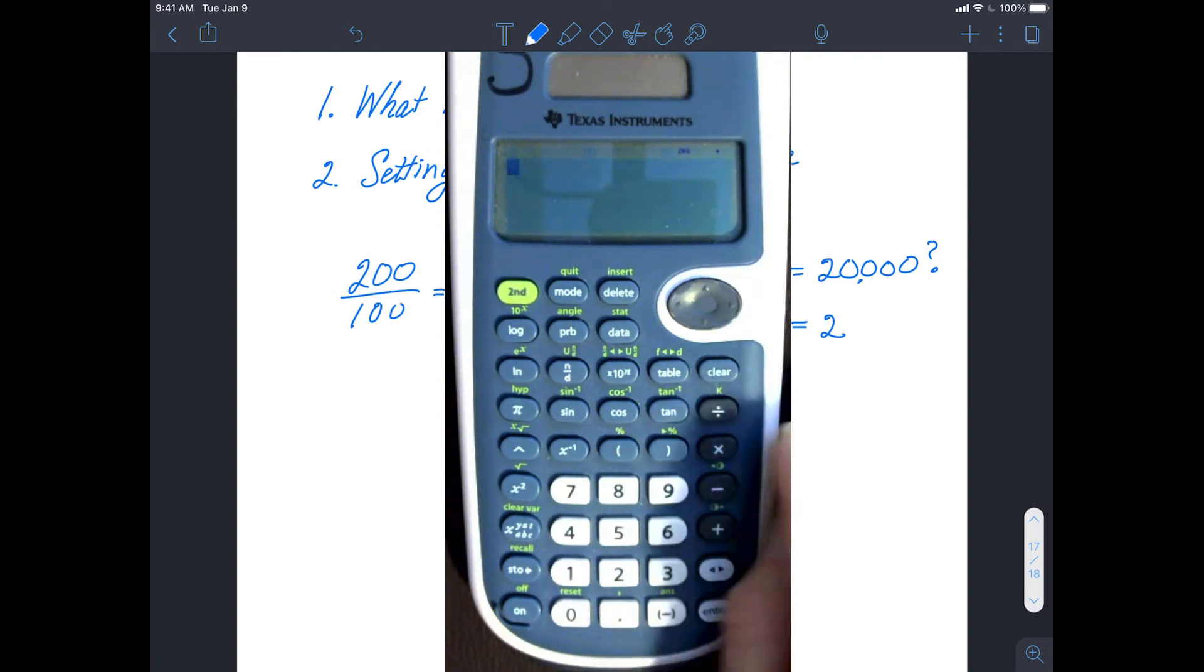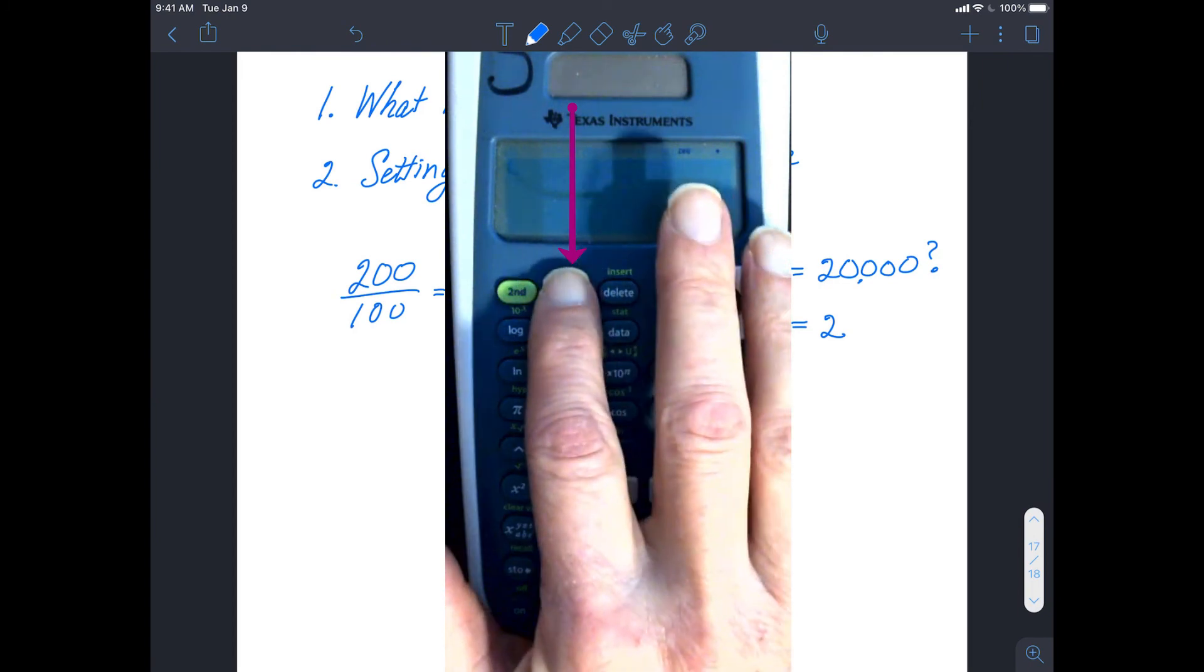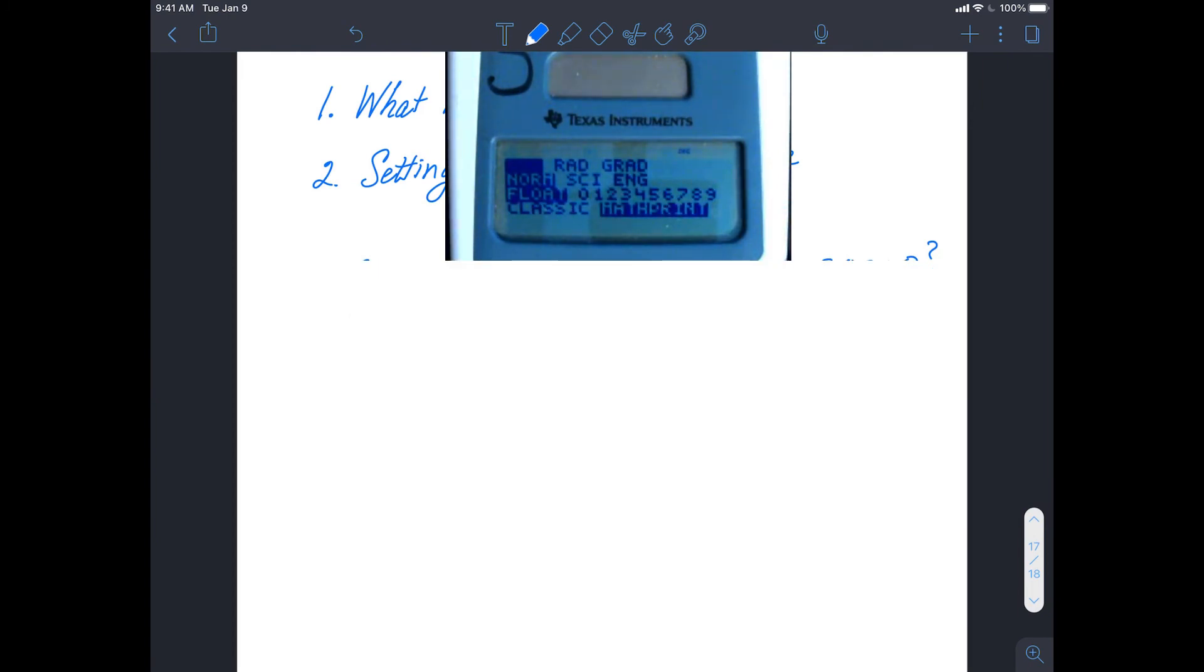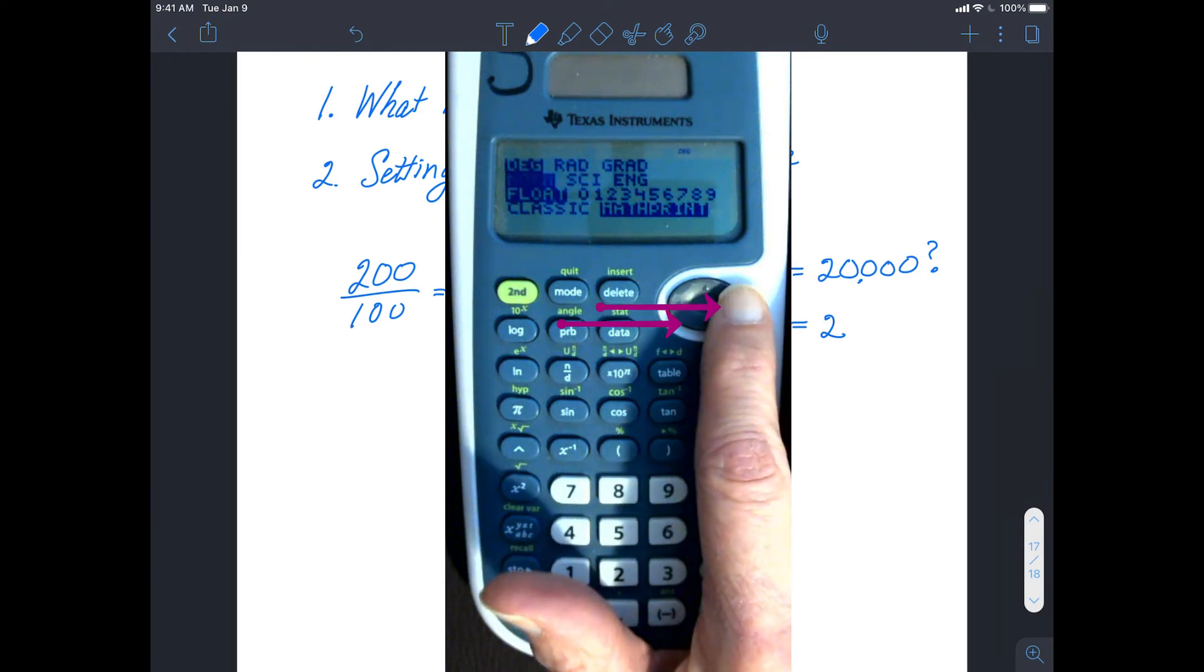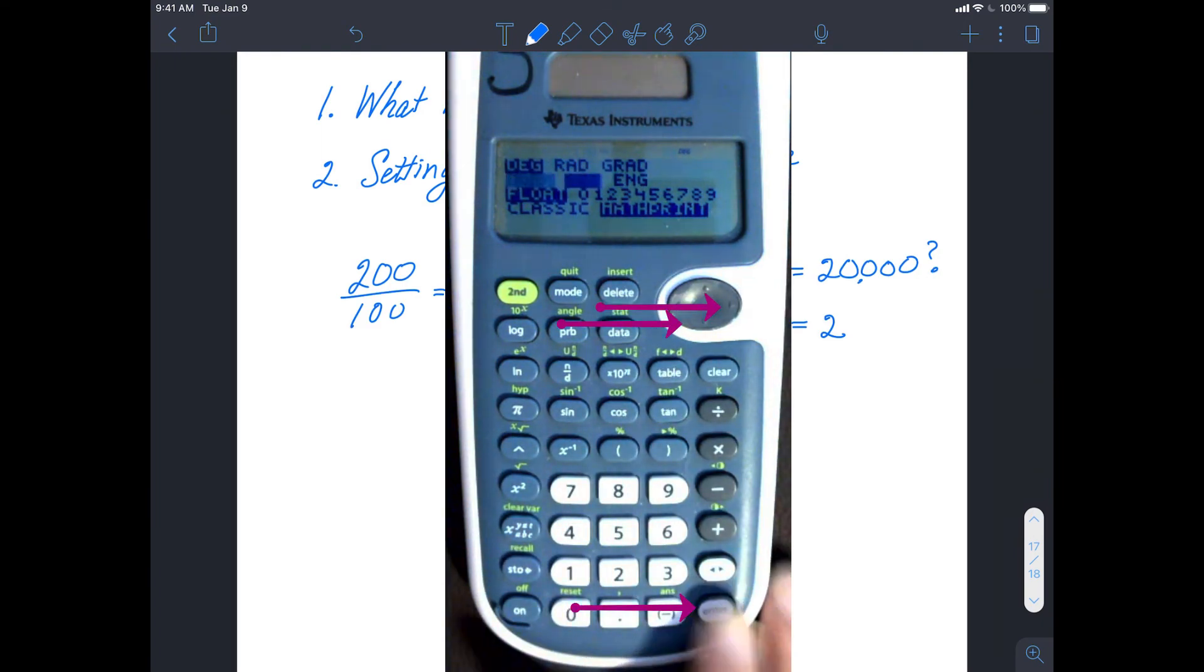You again press the Mode button, and you'll notice along the second line it says Norm, Sci, Eng. Norm is the normal mode that you've been using. If you would always like numbers to be in scientific notation, you move your cursor down to the second row, go over one to the right, and press Enter.